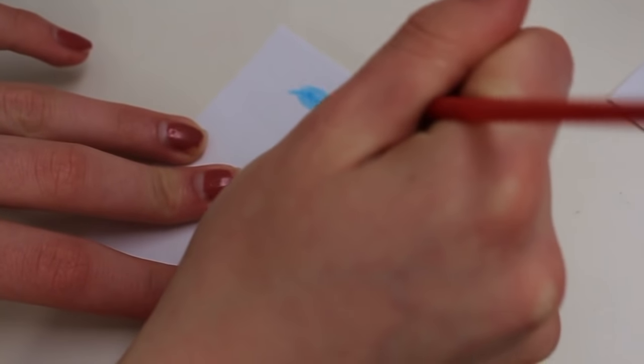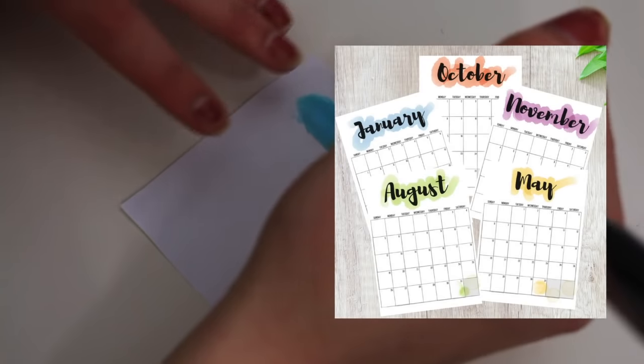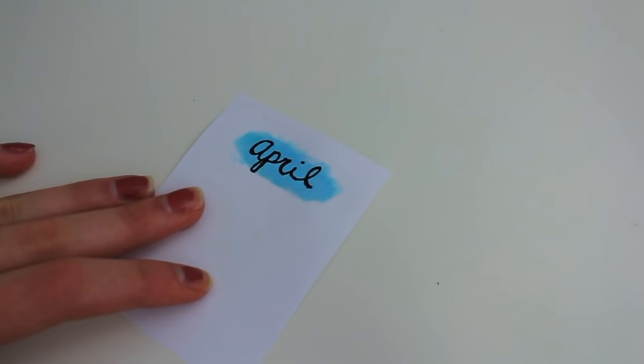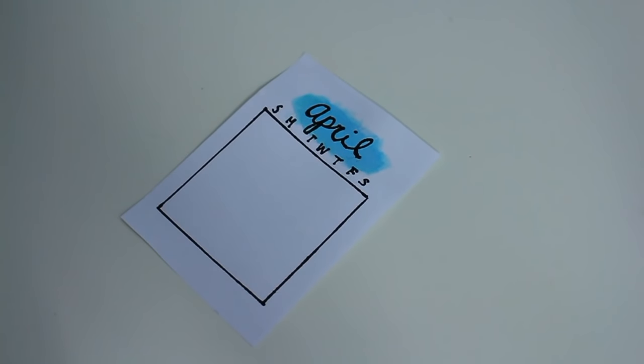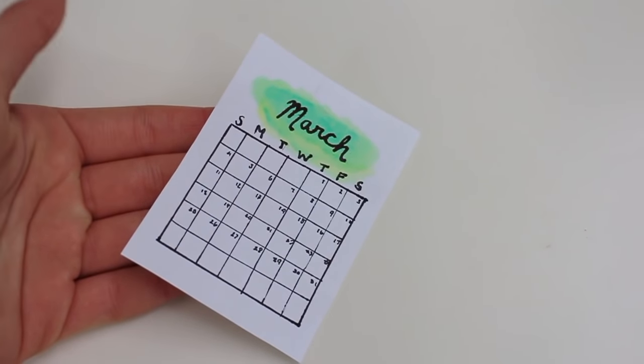So now onto the design part. I looked up pictures on Pinterest and I really like the watercolor design. I'll insert some pictures so you guys can see what I'm talking about. Just took my paint and I put a little swatch on the top and then I wrote the month with a black pen as well as the grid with all the days. And that's pretty much it for the calendar.